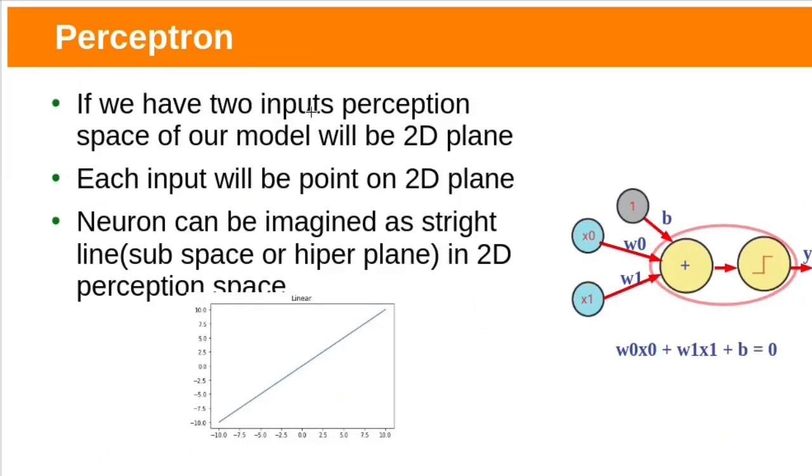Suppose if we have two inputs, Perceptron space of our model will be 2D plane x0, x1. Each input will be point on 2D plane. Neuron can be imagined as a hyperplane. In this case, it is straight line in 2D Perceptron space. In this case, Perceptron equation will be w0x0 plus w1x1 plus b equal to 0. x0, x1 are inputs and their respective weights are w0, w1, b is the bias here.